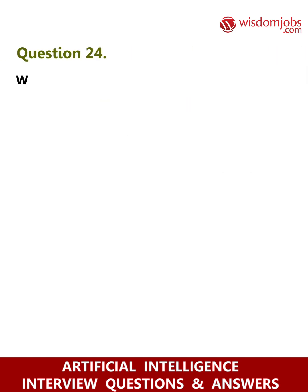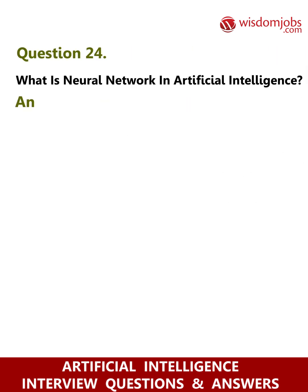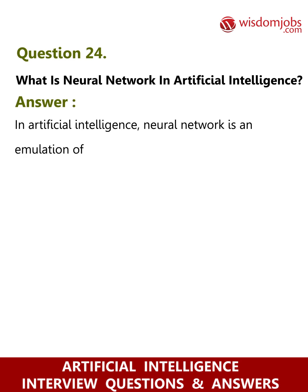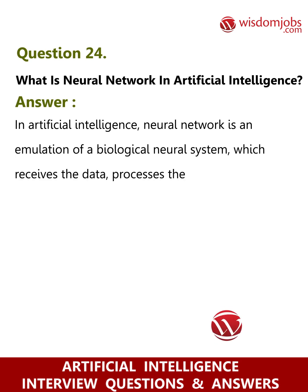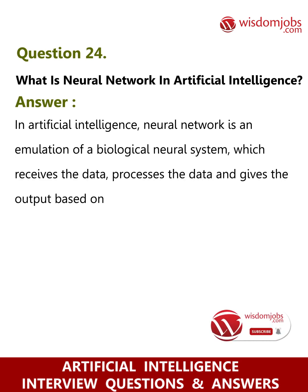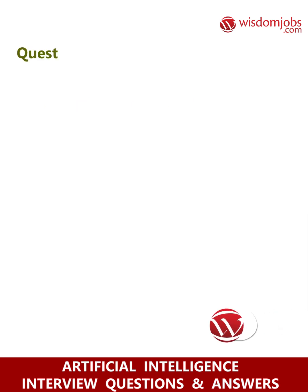Question 24: What is a neural network in artificial intelligence? Answer: In artificial intelligence, a neural network is an emulation of a biological neural system, which receives the data, processes the data, and gives the output based on the algorithm and empirical data.